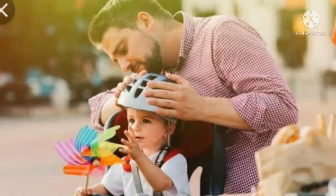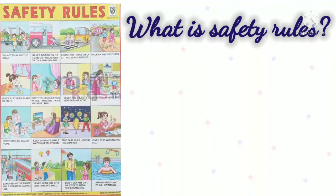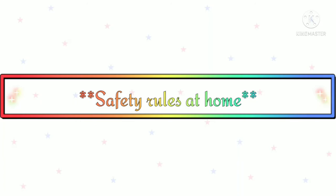If we carefully follow safety rules, we can keep ourselves and those around us safe. What are safety rules? Safety rules are rules that should be followed to keep ourselves and others safe from injuries and accidents.